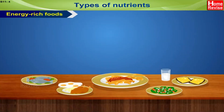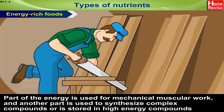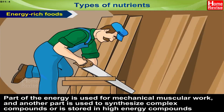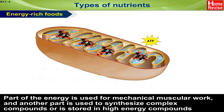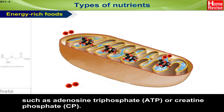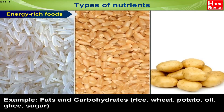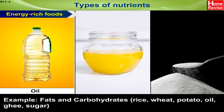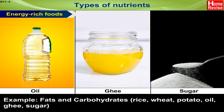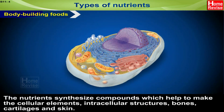Energy-rich foods: these foods break down to release energy. Part of the energy is used for mechanical and muscular work, and another part is used to synthesize complex compounds or is stored in high-energy compounds such as adenosine triphosphate (ATP) or creatine phosphate (CP). Examples of energy-rich foods include fats and carbohydrates such as rice, wheat, potato, oil, ghee, and sugar.